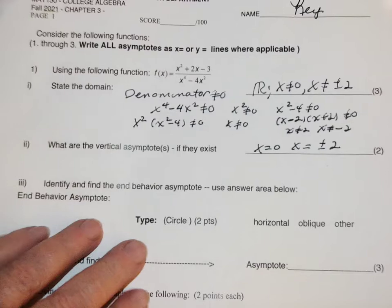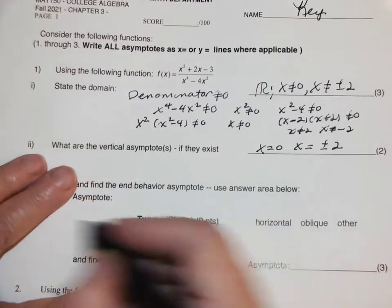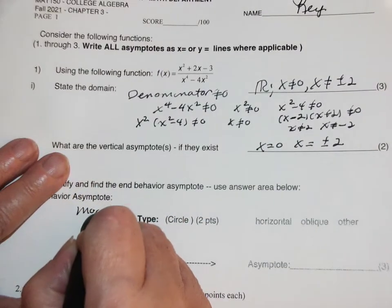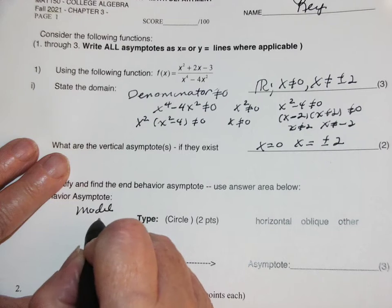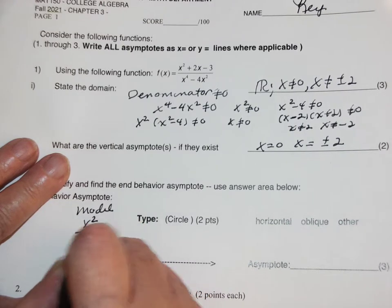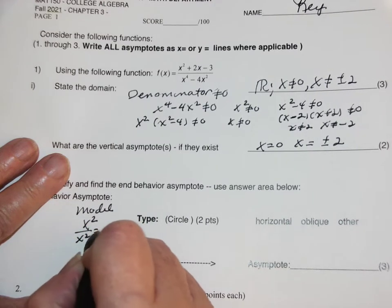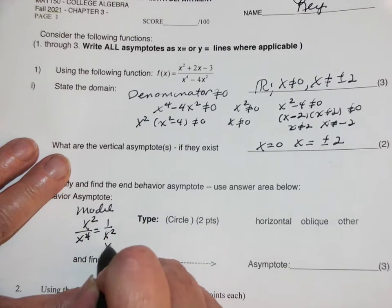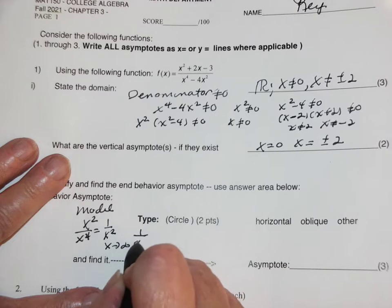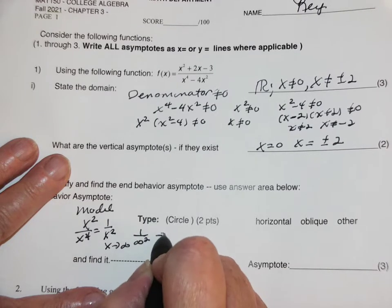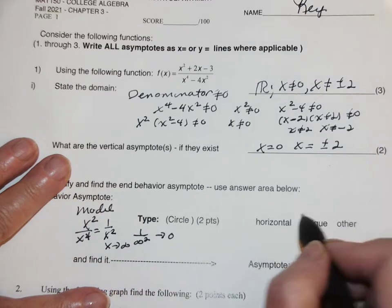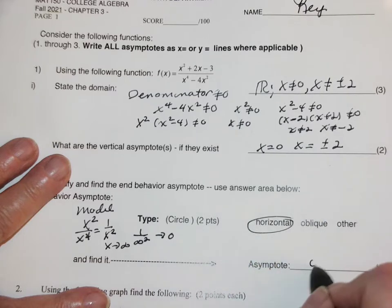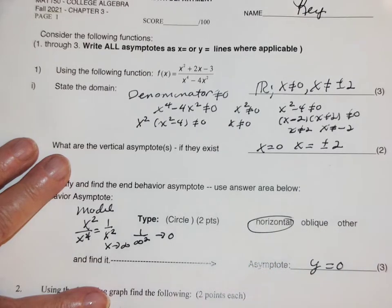What kind of end behavior do I have? Well, my model is going to be the quotient of the two highest powers, which is 1 over x squared. So as x goes to infinity, this goes to 1 over infinity squared, which goes to zero. So as a horizontal asymptote, y equals zero.